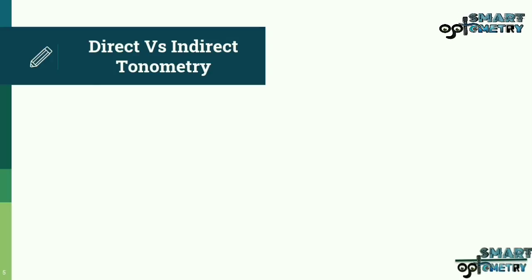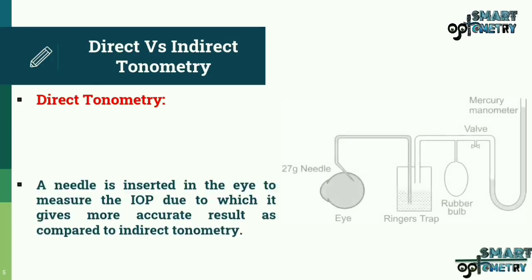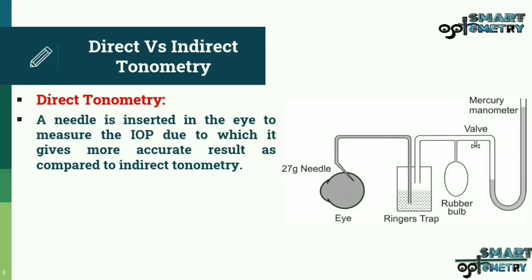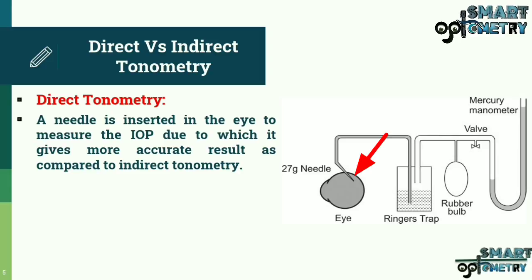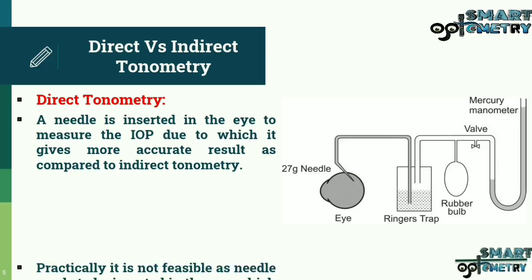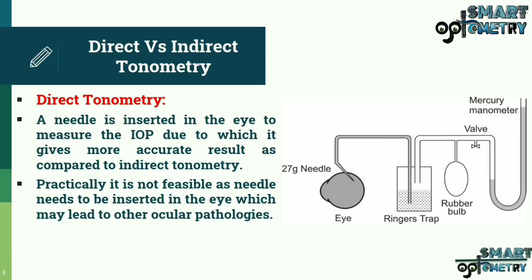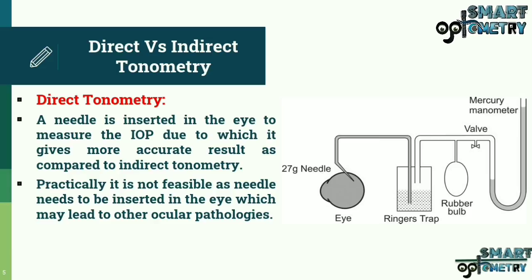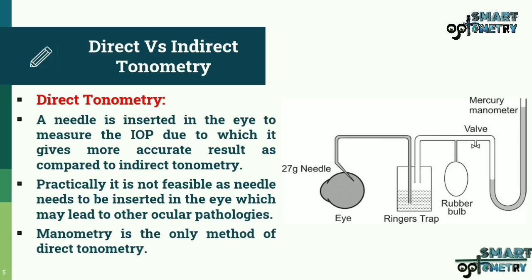Direct Tonometry: A needle is inserted in the eye to measure the IOP, which gives a more accurate result compared to indirect tonometry. However, it is not practically feasible as inserting a needle into the eye may lead to other ocular pathologies. Manometry is the only method of direct tonometry.